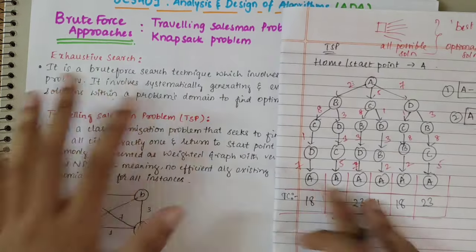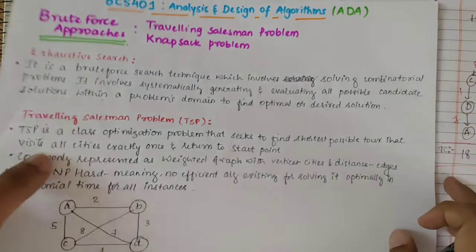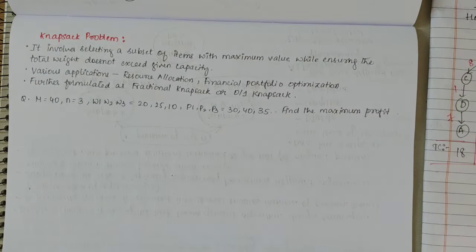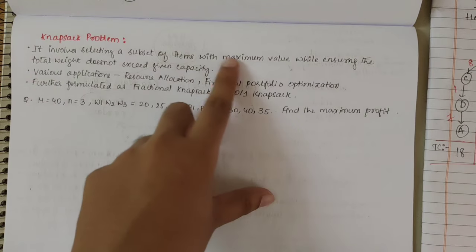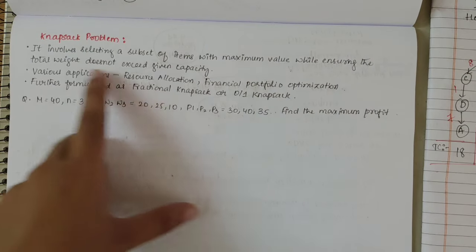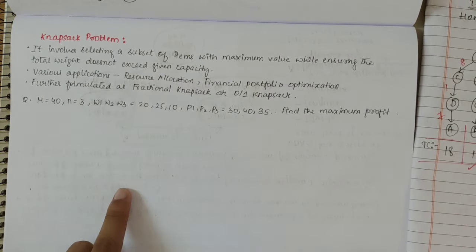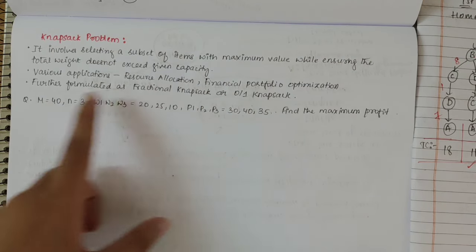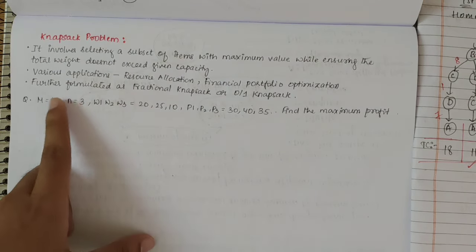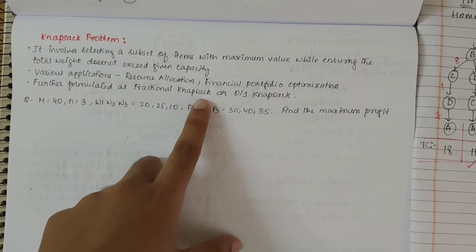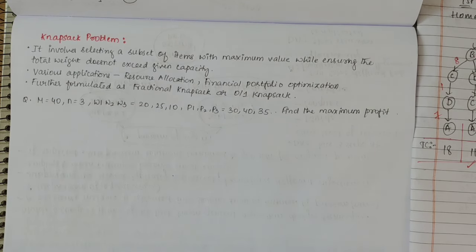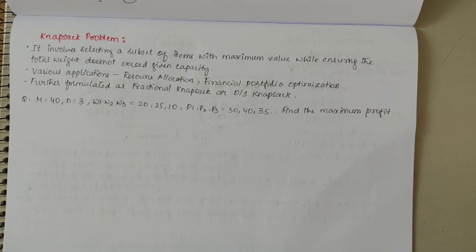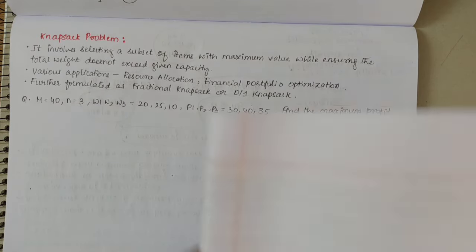Now let's look into the knapsack problem. Knapsack involves selecting a subset of items with maximum value while ensuring the total weight does not exceed a given capacity. It has various applications such as resource allocation and financial portfolio optimization. Knapsack can be further formulated as fractional knapsack or 0/1 knapsack, which will be discussed in upcoming modules.